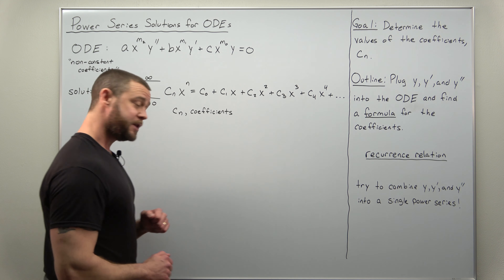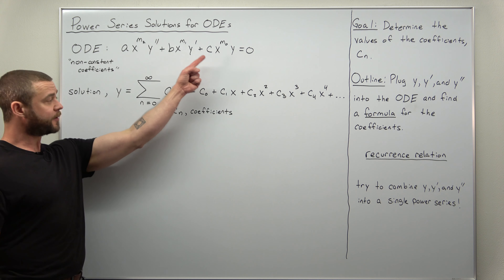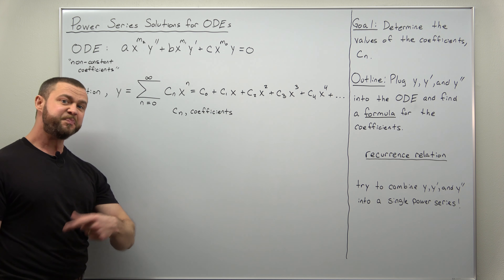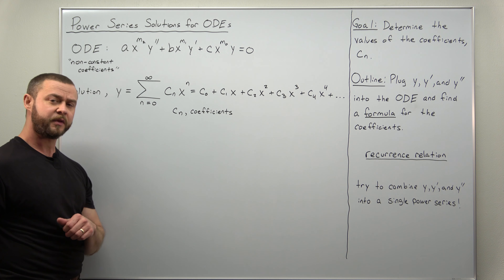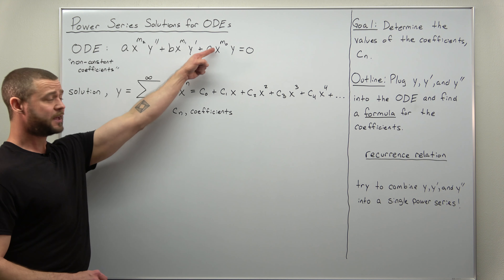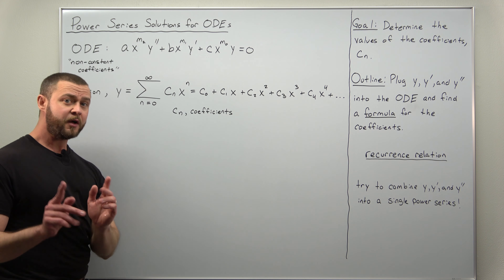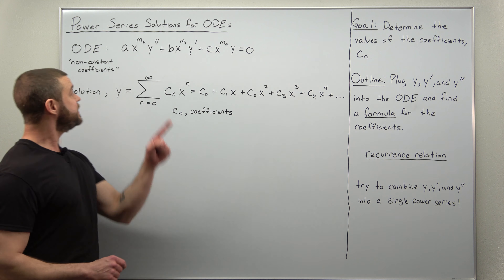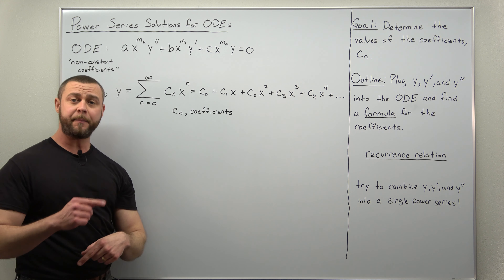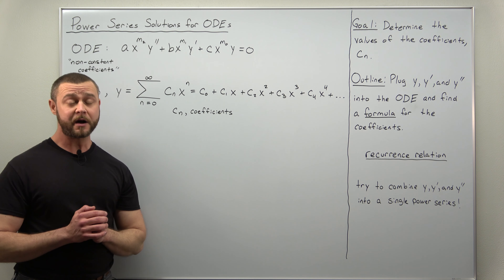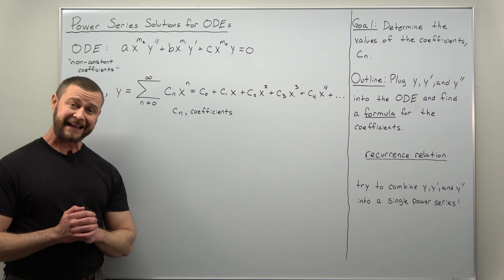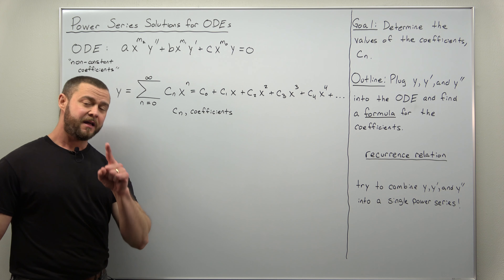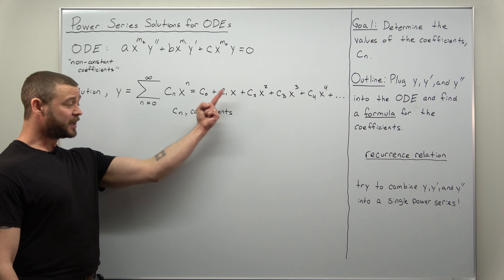The ODE that we'll be working with in general form will involve non-constant coefficients, but they're going to be really simple — typically powers of X, maybe multiplied by a coefficient. Be careful: if the power of X matches the order of the derivative we get a Cauchy-Euler equation, which we already know how to solve. So we won't be dealing with those — typically the powers of X here are going to be all mixed up, not matching the order of the derivative, and they become a lot harder to solve. In that case, what we do is we assume that this ODE has a solution we can represent as a power series.